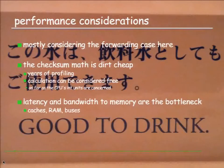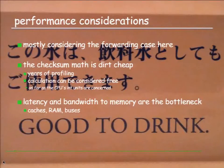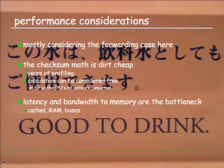The IP checksum just covers the IP header, while the protocol checksum covers a part of the IP header, the actual protocol header, and the entire payload. There are performance considerations in that. Being mostly involved with firewalls and routers, I care about forwarded packets, not locally generated ones all that much. The actual math for the checksum is dirt cheap. I spent many years profiling and you cannot even find the checksumming function anywhere noticeably up in the call graphs. The calculation can be considered completely free.